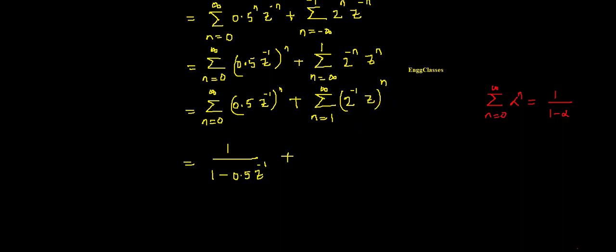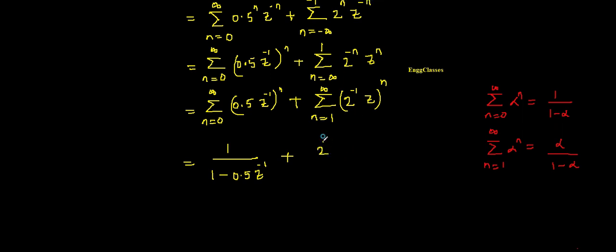The second term resembles another standard geometric series result: summation from n equal to one to infinity of alpha to the power n is nothing but alpha divided by (1 minus alpha). I should remember this. So in place of alpha I have 2 to the power minus 1 times z, giving me (2 to the power minus 1 times z) divided by (1 minus 2 to the power minus 1 times z).